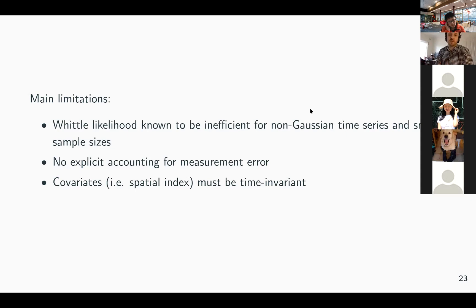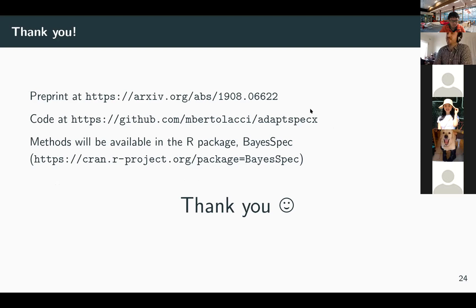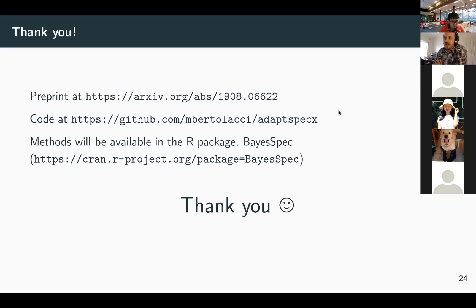Finally, the preprint is on arXiv and has been submitted — we'll see what reviewers think. The code for everything, all the plots, and the paper are on GitHub. There is an R package called BayesSpec which contains univariate ADAPT-SPEC. The multiple time series methods aren't available in it yet, but they will be at some point. If you want access, I could send you that version of the package from the repository. So thank you so much for listening, and I'm happy to answer any questions.